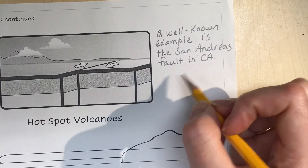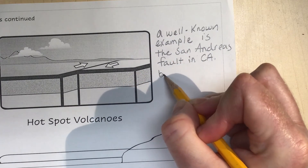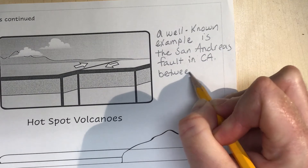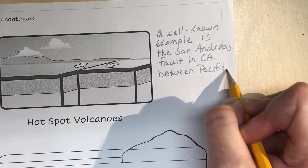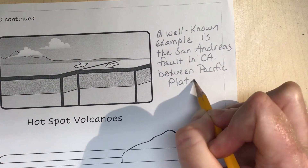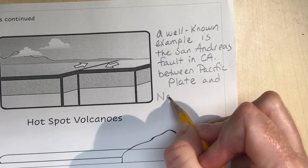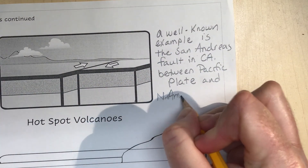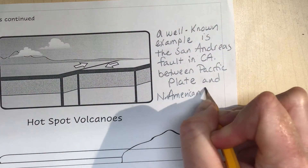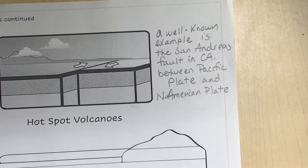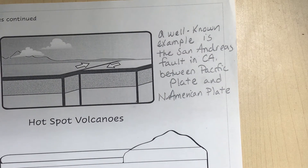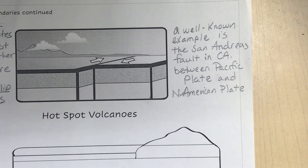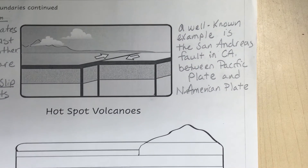The San Andreas Fault is the boundary between the Pacific Plate and the North American Plate. We are on the Pacific Plate, and further east in the Antelope Valley they are on the North American Plate — and the rest of the country is on the North American Plate as well.